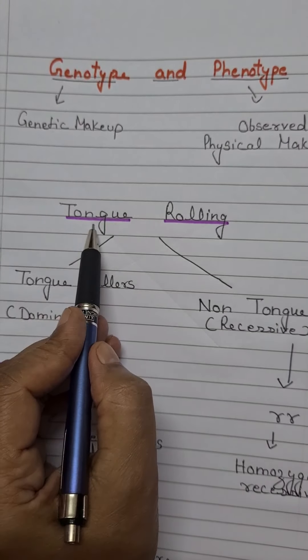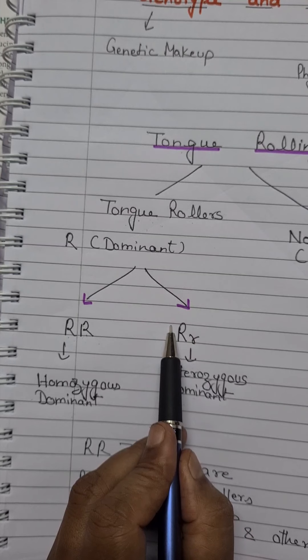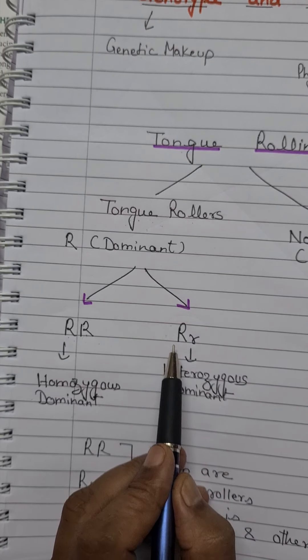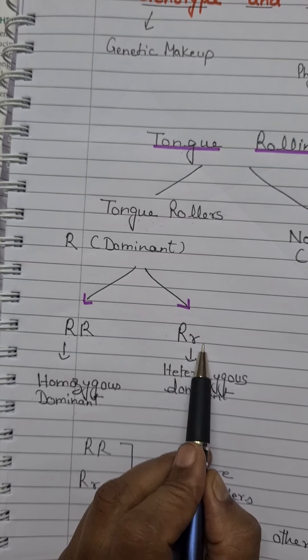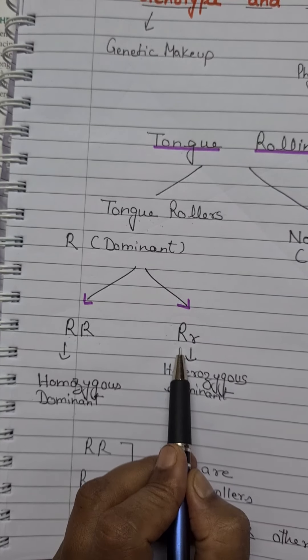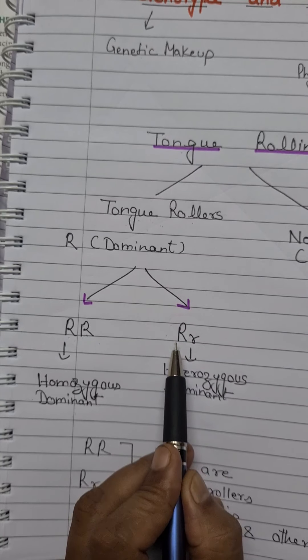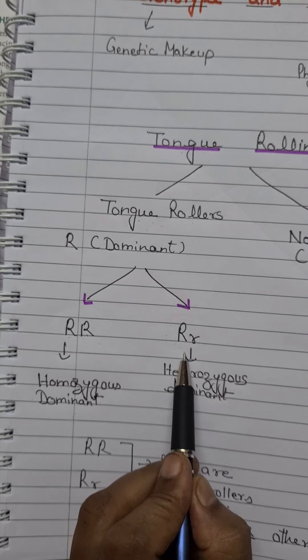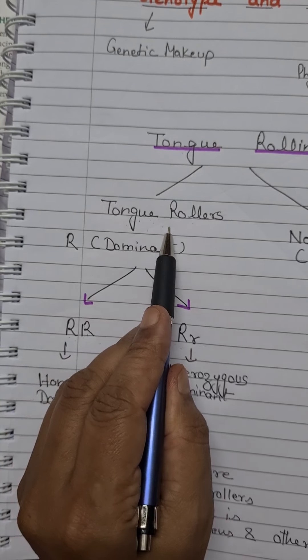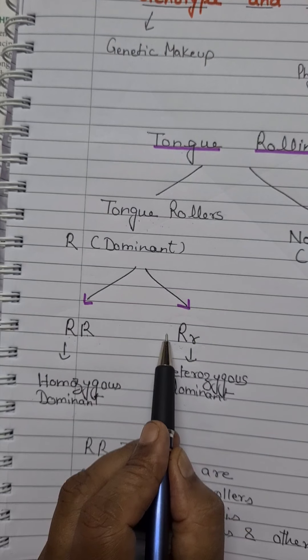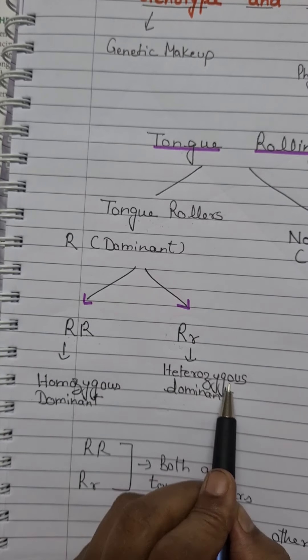The second type of tongue rollers are heterozygous dominant. In heterozygous tongue rollers, the two alleles controlling tongue rolling are different from each other — one allele is dominant and another is recessive. But since one dominant allele is present and able to express itself, the observed feature is that the person is a tongue roller. However, the genetic constitution is heterozygous, meaning one allele is dominant and another is recessive.